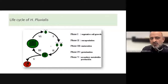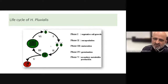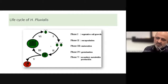Looking at the life cycle of Haematococcus pluvialis, we see phase 1 which is vegetative cell growth, phase 2 which is encapsulation, phase 3 is maturation, phase 4 is germination, and phase 5 which is the secondary metabolite production cycle. The reason why we study these life cycles as biotechnologists is because we can manipulate the conditions of the culture so as to achieve the highest production of the secondary metabolite, which in this case is astaxanthin.